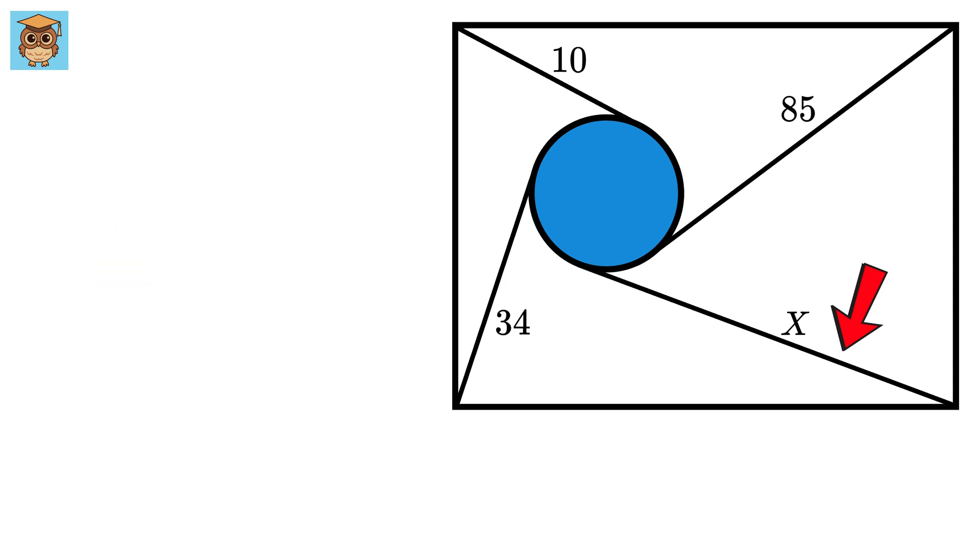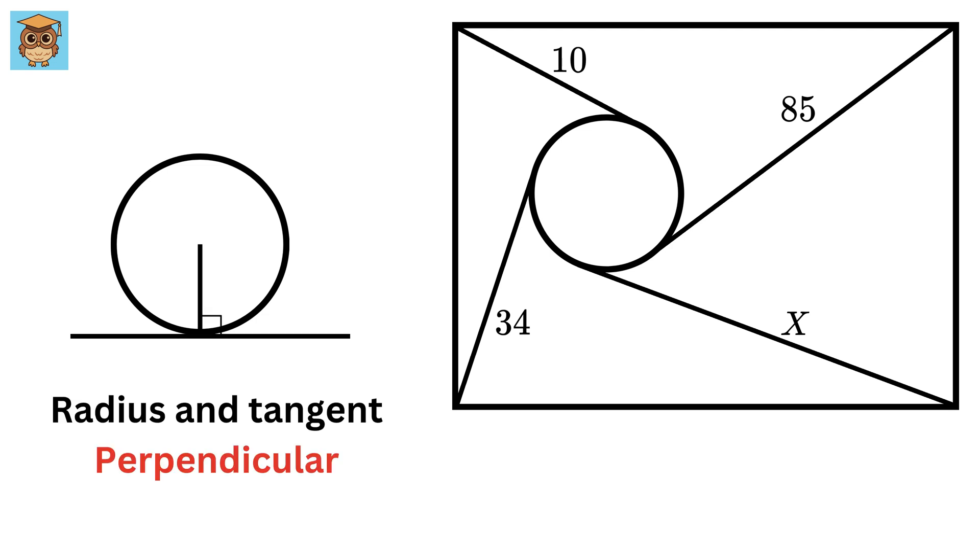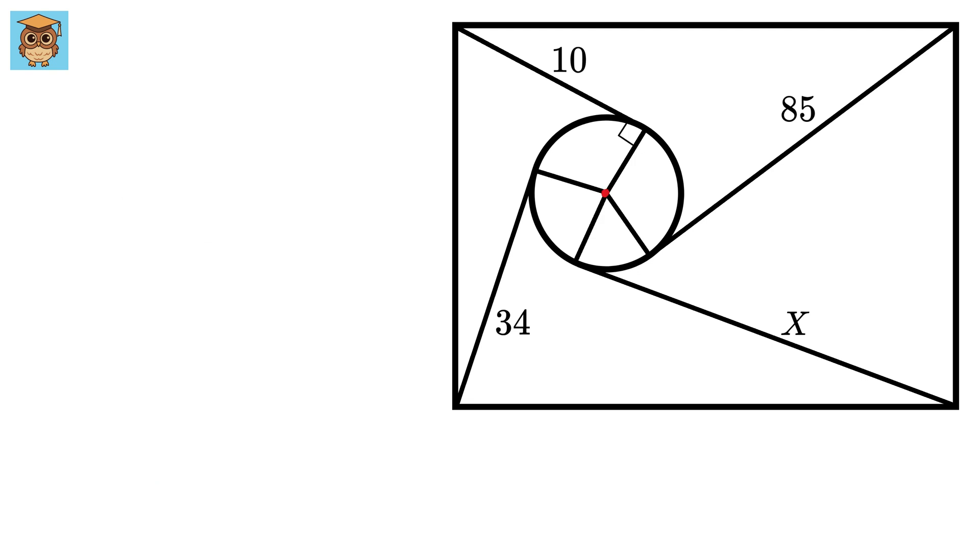First thing is, we know that in any circle, radius and the tangent line are always perpendicular to each other. So, when we draw this radius, it will be perpendicular to this tangent. Similarly, all of these three radii will also be perpendicular to their respective tangents. Label all these radii as r.